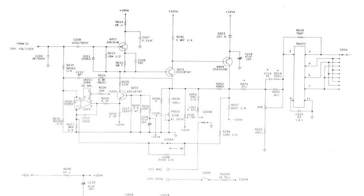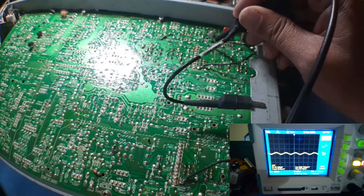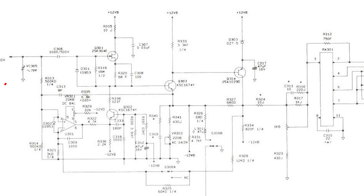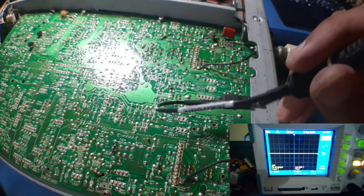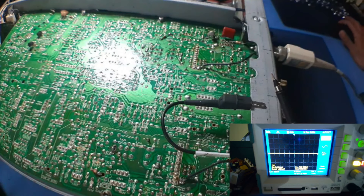Attenuate — channel 1 input amplifier, channel 1 input amplifier. First component to be checked is C209. So the channels are the same.